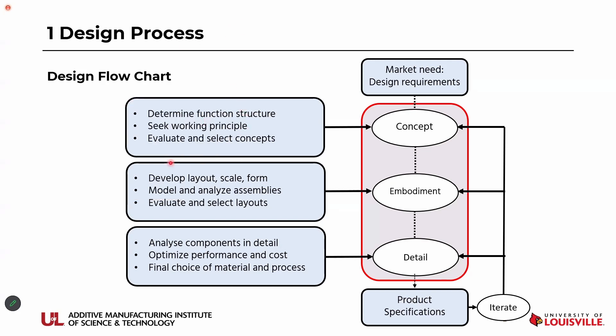In the concept stage, which is the first stage in product design, you are going to define the function of the product and what is the working principle. In the next embodiment stage, you figure out what are the different parts in the product, what is the model, and how do you assemble different parts together. In the final stage, you go for the detailed design of each part.